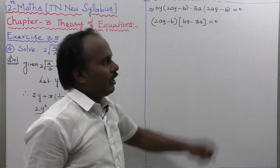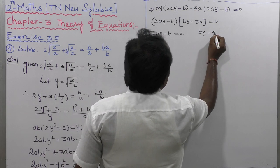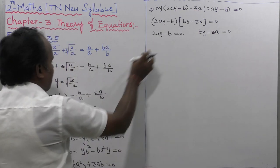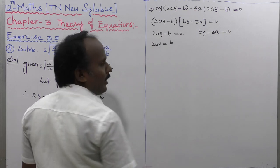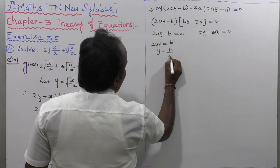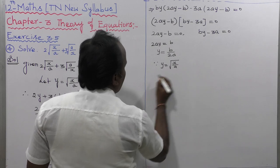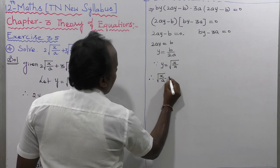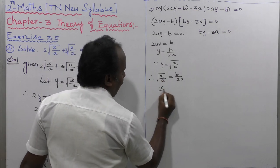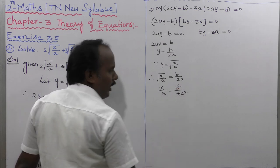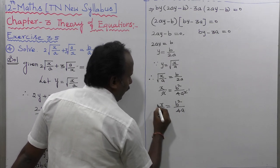The first factor: 2AY minus B equals 0. The second factor: BY minus 3A equals 0. Solving the first factor — replacing Y with root of X by A — first find Y: 2AY equals B, so Y equals B divided by 2A. Since Y equals root of X by A, therefore root of X by A equals B by 2A. Squaring on both sides to find X: X by A equals B squared by 4A squared. Cancelling A: X equals B squared by 4A. That is the first X value.